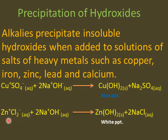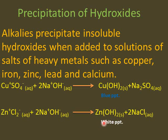In the second reaction, zinc chloride is reacting with base sodium hydroxide. Zinc is a heavy metal and it reacts with OH negative to give zinc hydroxide, while NaCl is also formed as a common salt. The white precipitates of zinc hydroxide indicate that zinc chloride was used in the reaction. These white precipitates can be used to identify zinc.